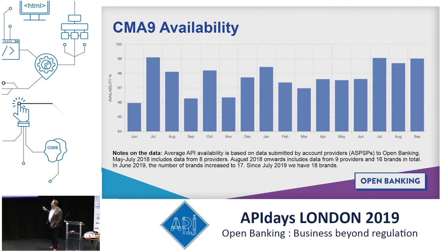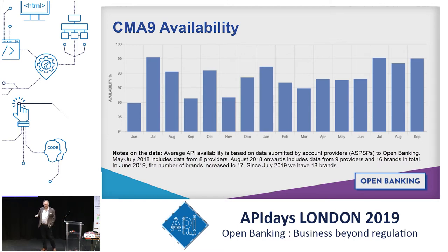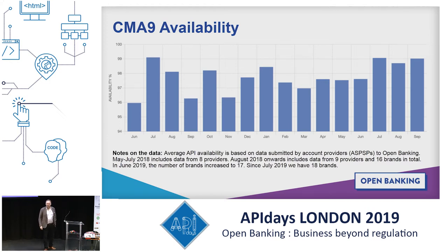I'm going to show you some warts-and-all data now. This is September data again provided by the CMA 9 — freely available on the Open Banking website. This shows you API availability across all of the CMA 9. If you think of this in terms of what a good API looks like, it's not great, right. It's getting better — we're getting towards 99%. That might be okay for account information where you can cache data, but it's nowhere near good enough for payments. For payments you want 100%, but it's getting better.